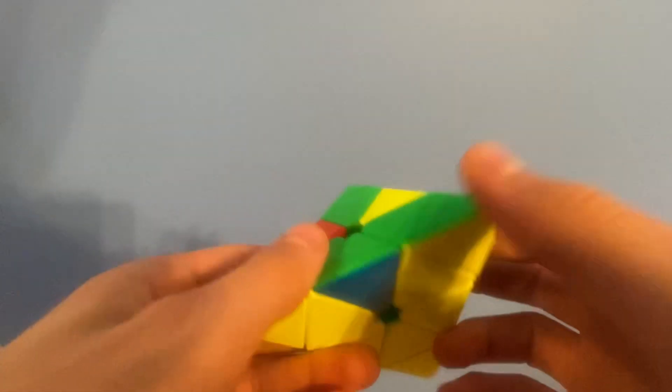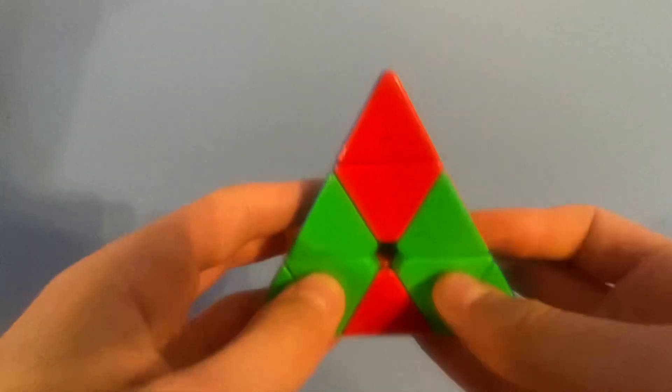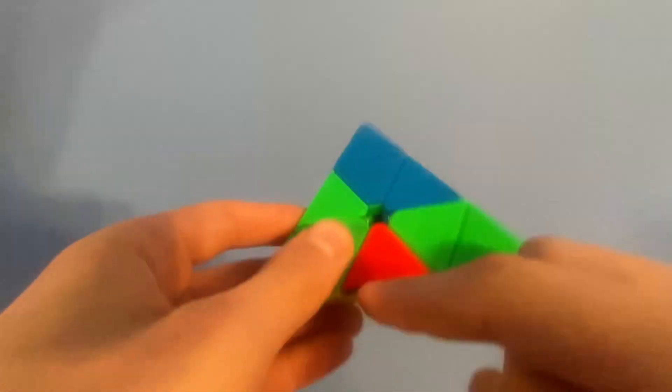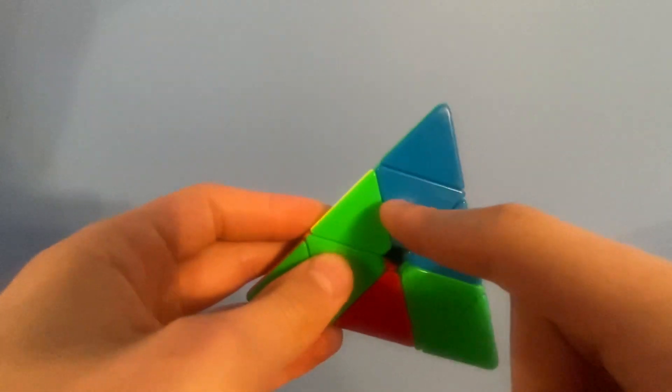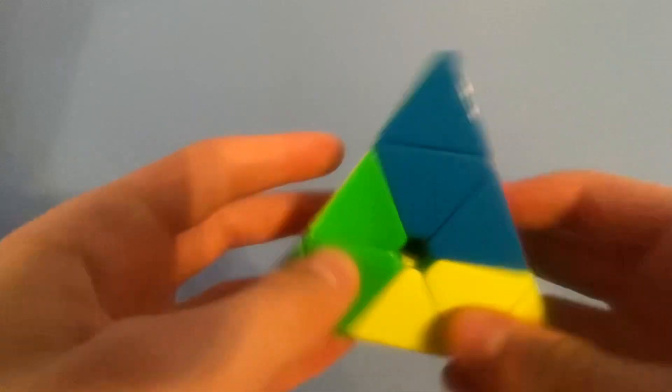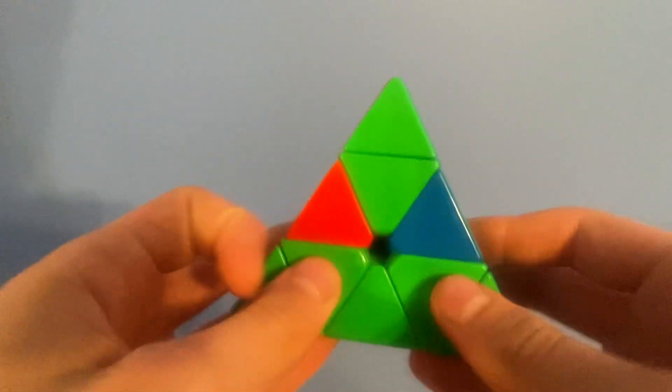So, lastly, let's say I have this. So, the blue edge matched up with the blue center. If I do R U prime R prime, that's going to bring it to the bottom, so no good.